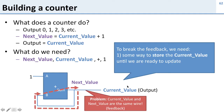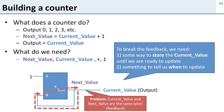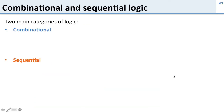To break the feedback we need two things: some way to store the current value until we're ready to update it — storing current value until we update to the next value — and something to tell us when to do that update. The storage here is exactly the state I was talking about. And the signal that tells us when to update is going to be a clock.